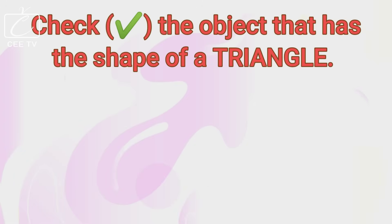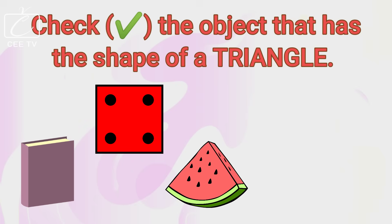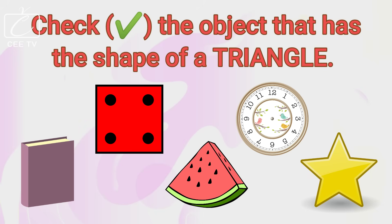Check the object that has the shape of a triangle. The watermelon has the shape of a triangle. Excellent! The watermelon has the shape of a triangle.